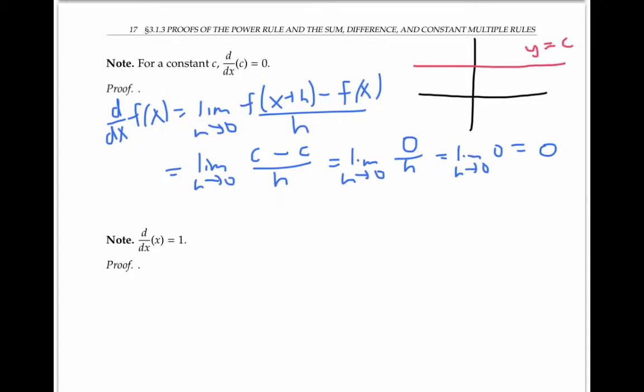Intuitively, it also makes sense that the derivative of the function y equals x has to be one, because the graph of y equals x is a straight line with slope one.